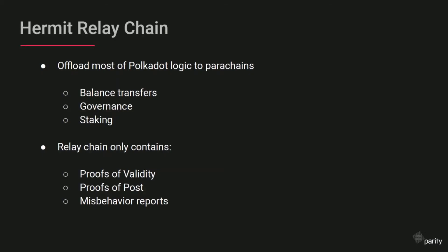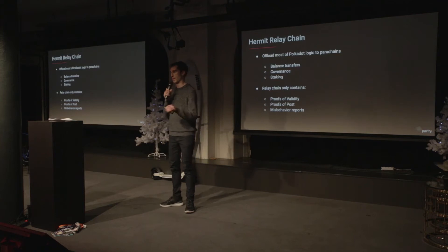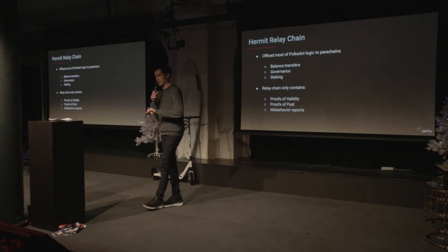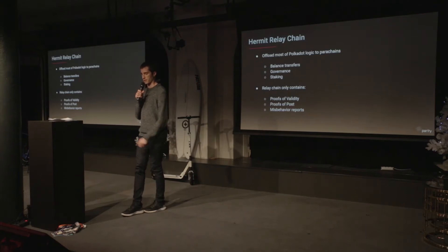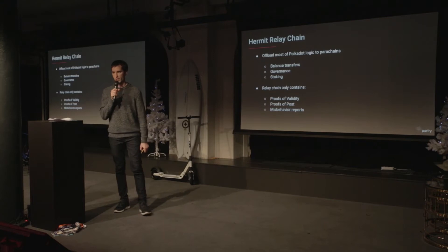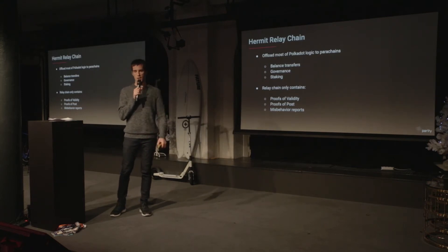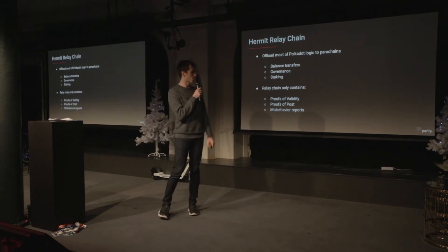We actually want to offload all of that so that the only things going into the relay chain are proofs of validity of the parachain blocks, proofs of post — a proof that you sent a message or that it was delivered — and misbehavior reports. If somebody catches a validator who's up to some misbehavior, that's a first-class type of message that should arrive directly to the relay chain. That'll be in one of our next waves of development.